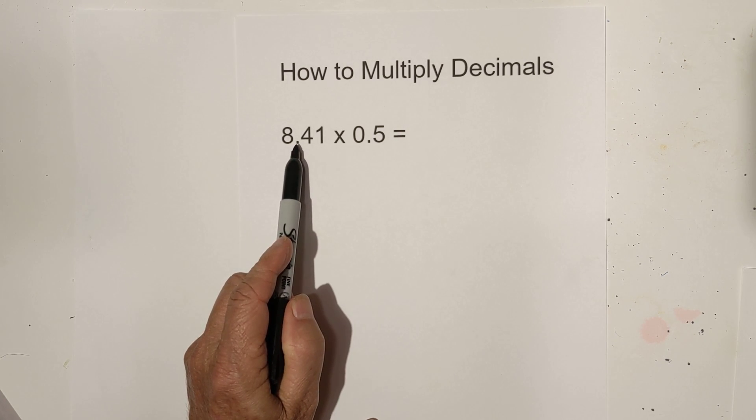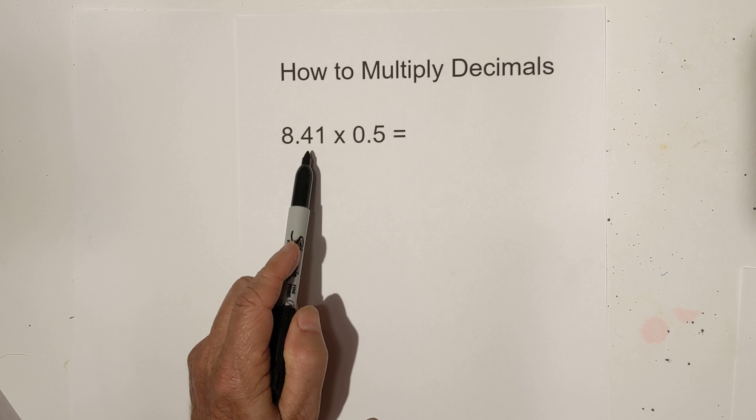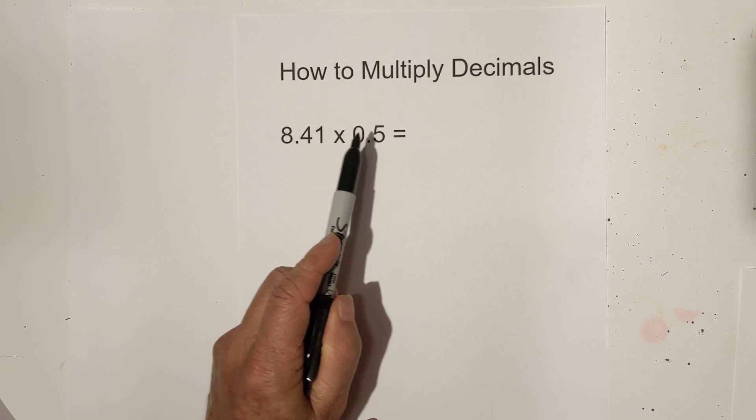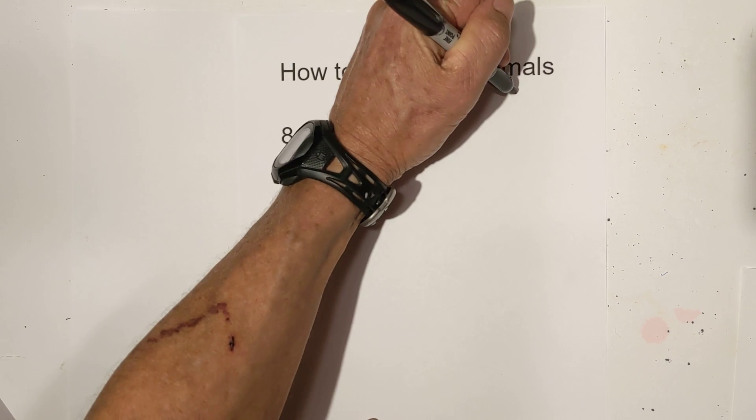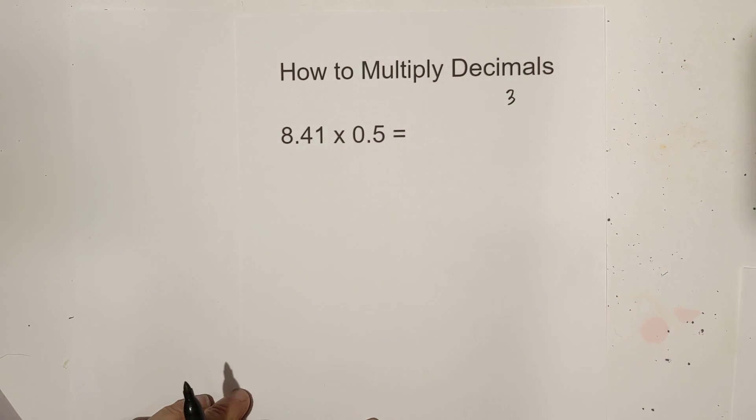count how many numbers are to the right of the decimal point. In this we have one, two. Then we have three so I'm gonna write a three here. Okay, that's step one.